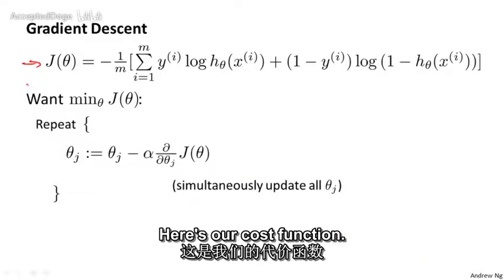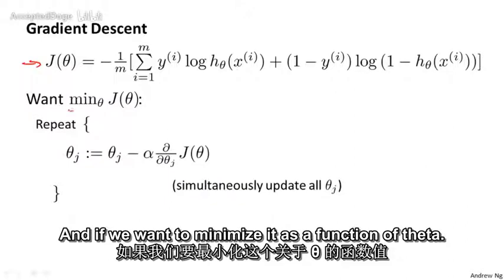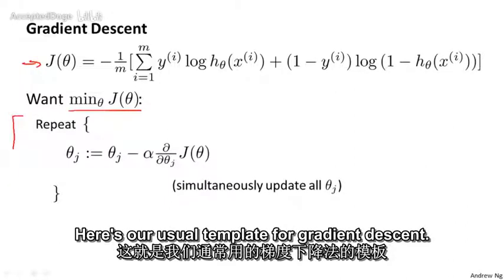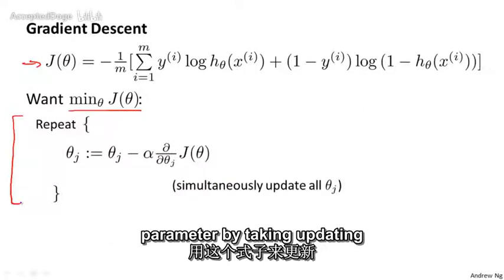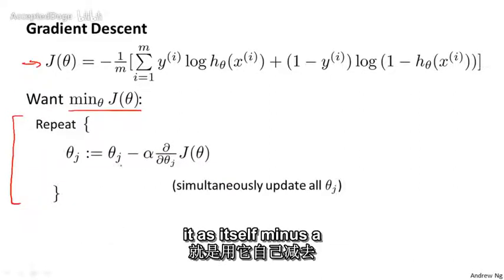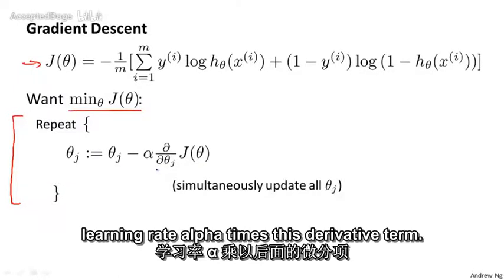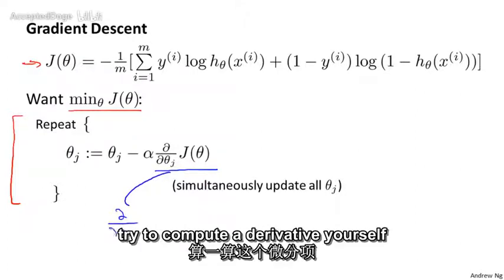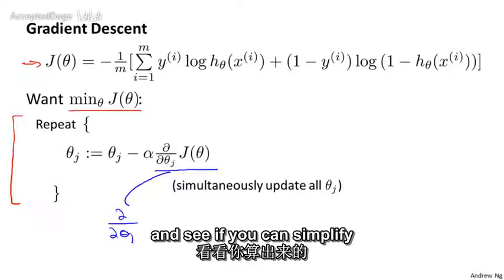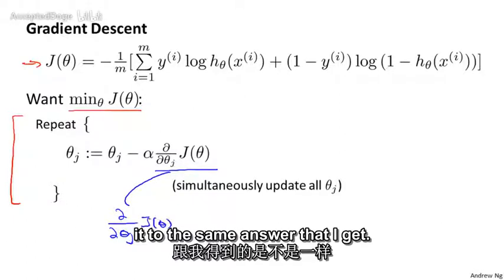The way we're going to minimize the cost function is using gradient descent. Here's our cost function. And if we want to minimize it as a function of theta, here's our usual template for gradient descent, where we repeatedly update each parameter by taking, updating it as itself minus the learning rate alpha times this derivative term. If you know some calculus, feel free to take this term and try to compute the derivative yourself and see if you can simplify it to the same answer that I get.